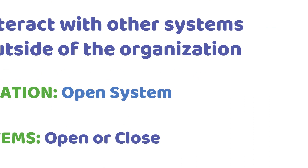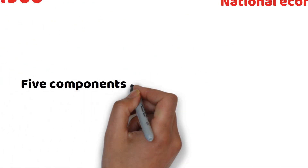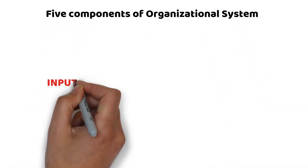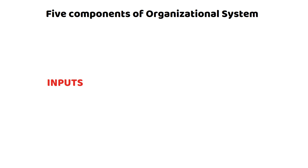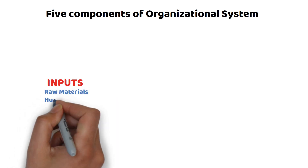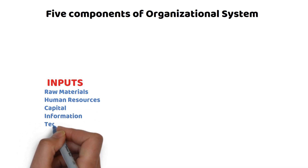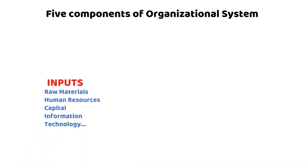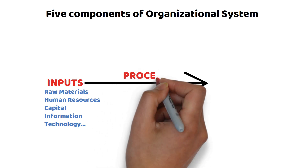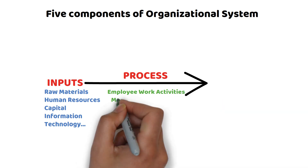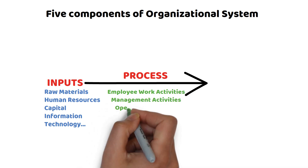According to the systems approach, an organizational system has five components. Number one, inputs — which may be raw materials, human resources, capital, information, technology, and so on. Number two, a transformational process — which includes employee work activities, management activities, and operations methods.